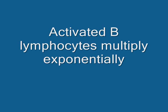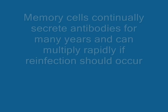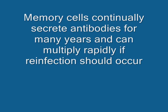Activated B lymphocytes multiply exponentially. Some differentiate to become memory cells. Memory cells continually secrete antibodies for many years, and can also reproduce rapidly if reinfection should occur. Dun dun dun!